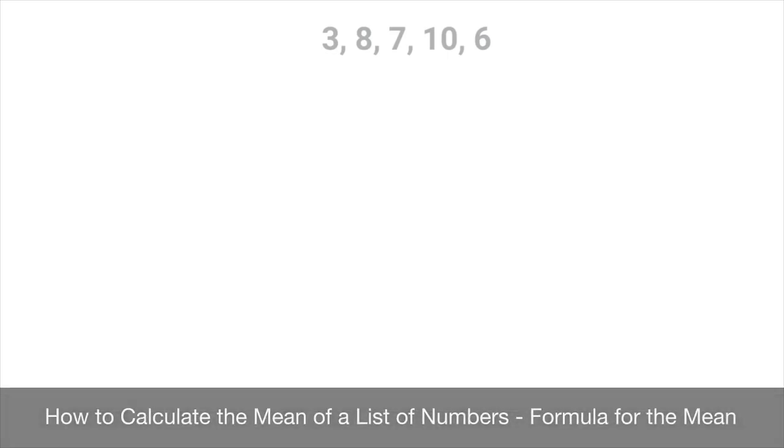We now learn how to calculate the mean of a list of data. The mean of a list of data is what we commonly refer to as the average. Be careful though, as the mean of a list of data is a very specific type of average, and there are several other types of averages that we'll be learning about.